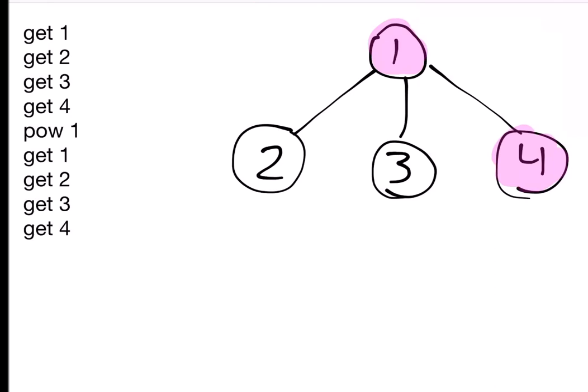You then have two types of queries. Type 1 is represented by POW and then a number, which basically says toggle all the lights in the subtree of that number. For example, POW 1 would toggle all 4 of the lights, whereas POW 2 would only toggle light 2.